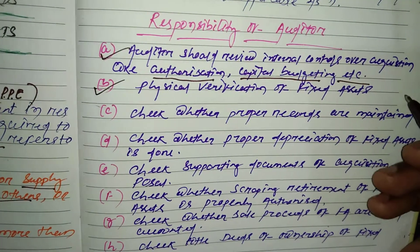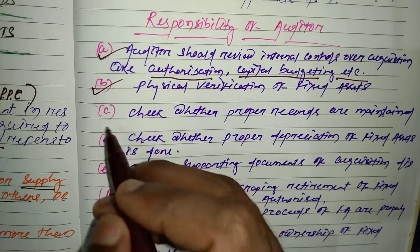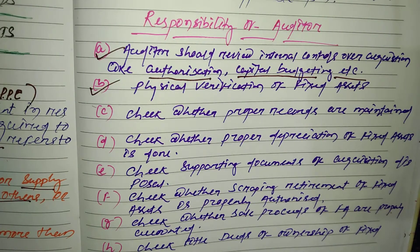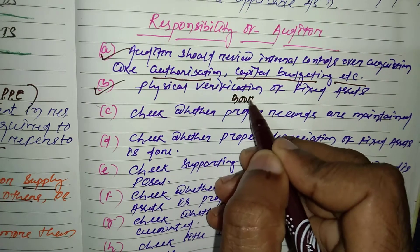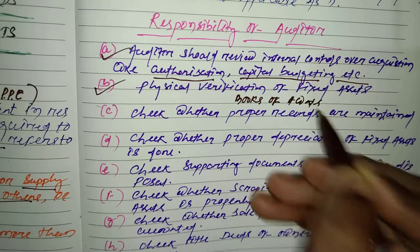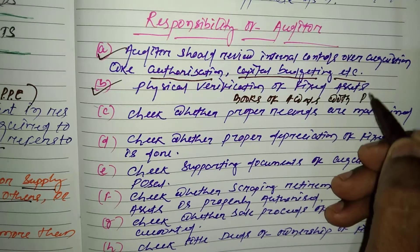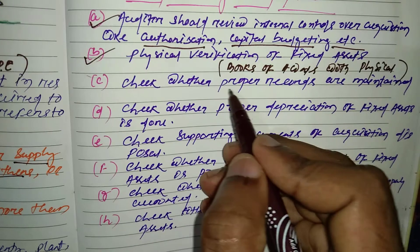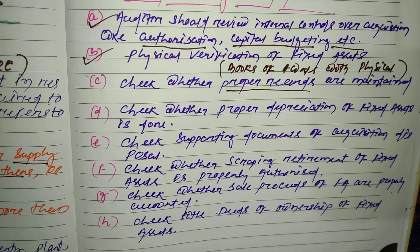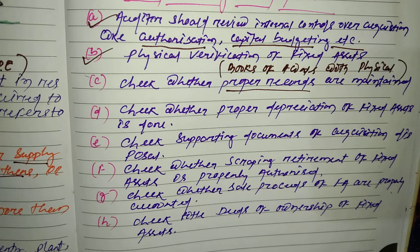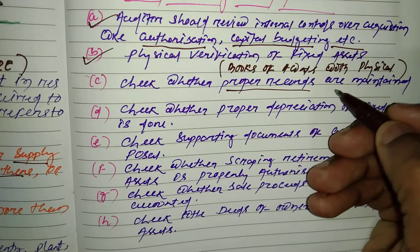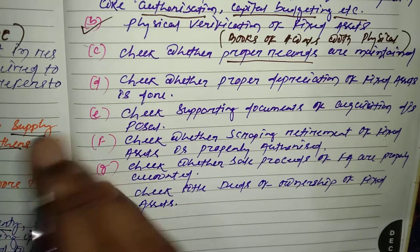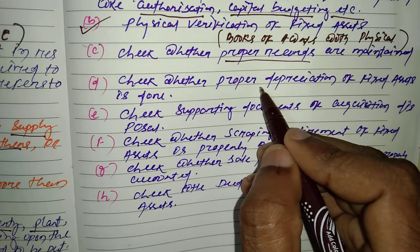The auditor should physically verify all the fixed assets which exist during the financial year, and that should be matched with books of accounts. The auditor will also check whether proper records are maintained or not, and that these records need to be properly maintained.